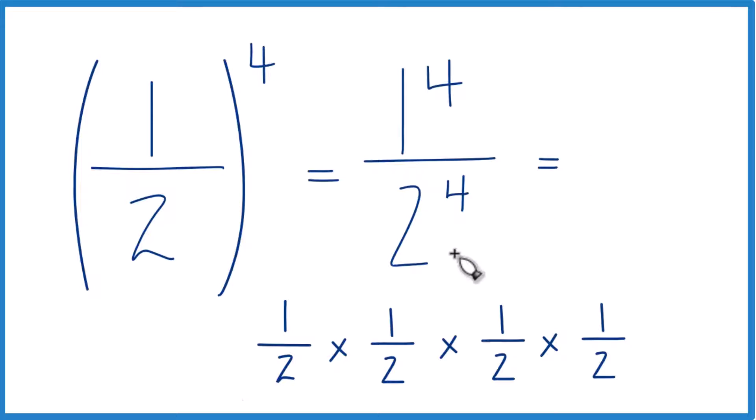So one to the fourth, that's just going to be one. So two times two is four, two times four is eight, two times eight is sixteen.